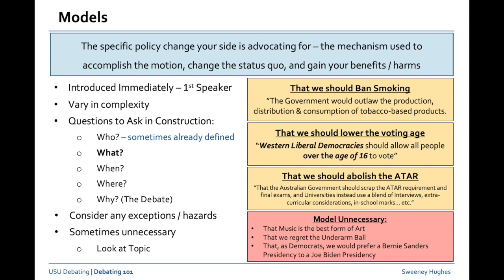A few examples. For 'we should ban smoking' — quite simple. You'd say the government would outlaw the production, distribution, and consumption of tobacco-based products. That's effectively your model. You don't need to be overly grandiose with it, just put it somewhere at the start of the speeches.